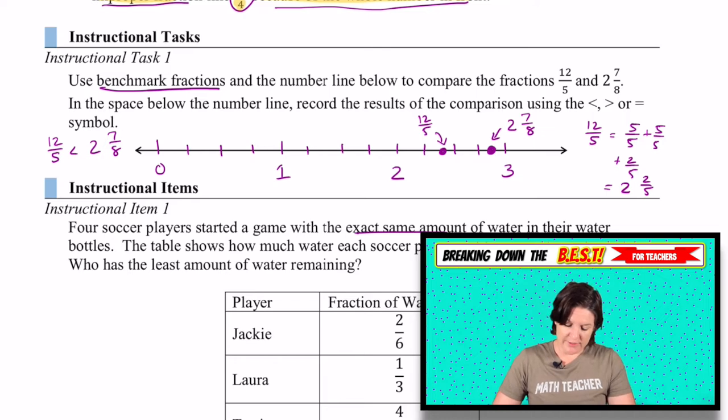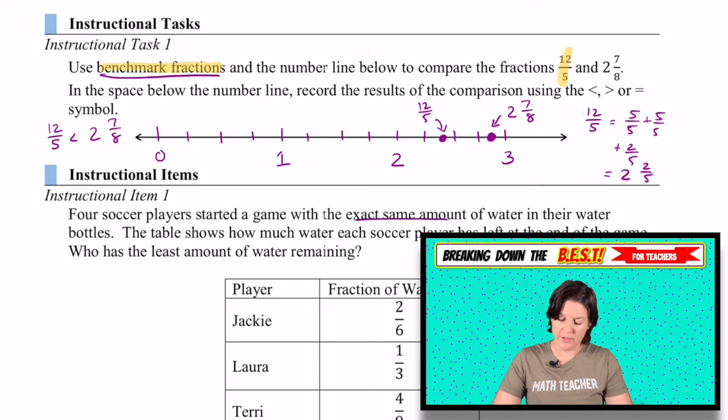Here's an example of an instructional task. It says to use the benchmark fractions and number line to compare 12 fifths, a fraction greater than one and two and seven eighths, a mixed number. So here, breaking it into those benchmark fractions, we can say that 12 fifths is like if we decomposed it, we could say that that would be five fifths plus five fifths plus two fifths, which equals the mixed number of two and two fifths, which would go right about there, where two and seven eighths is much closer to three. So we can quickly reason using those benchmark fractions, using what we know about decomposing fractions to help us justify those comparisons.